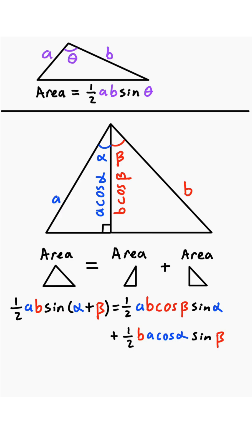Now, if we look at all three of these, they all have a one half times A times B in common. So we can multiply both sides by two and divide both sides by AB to get rid of it.